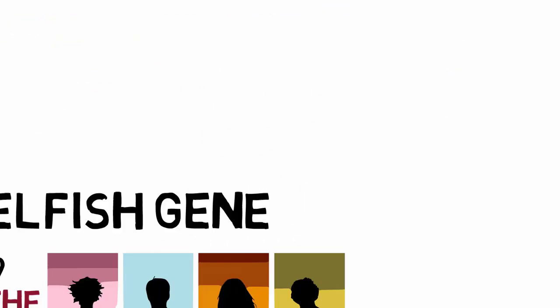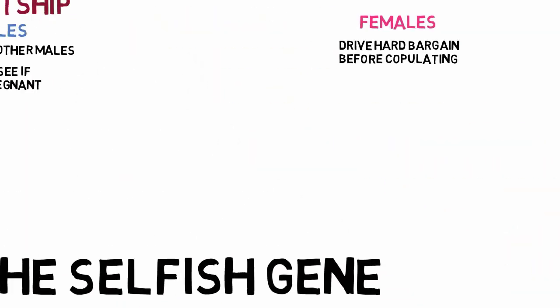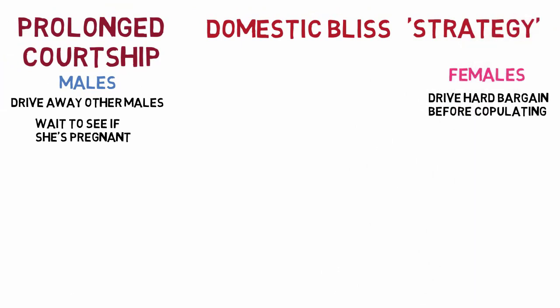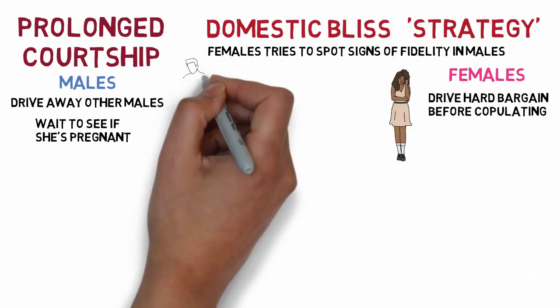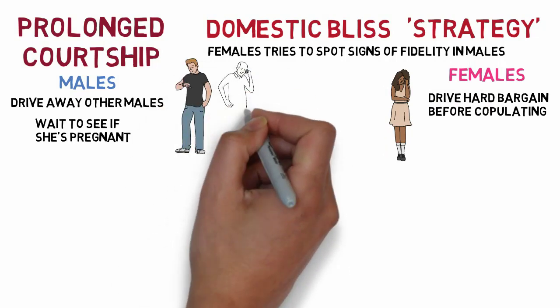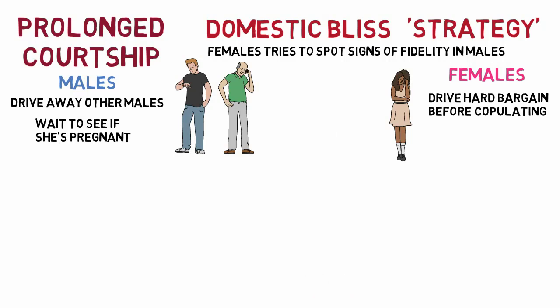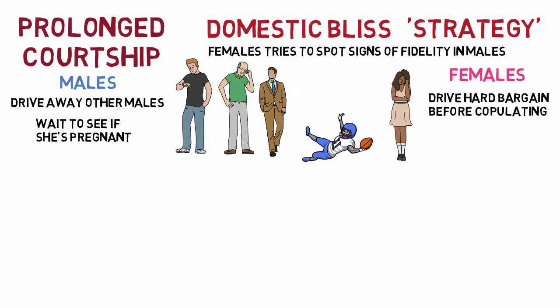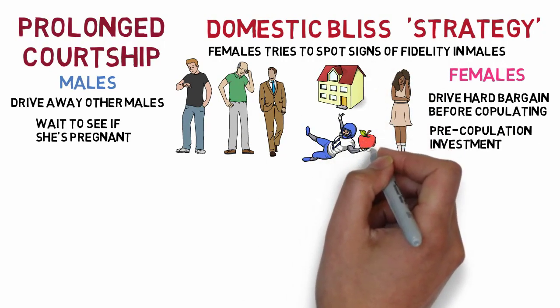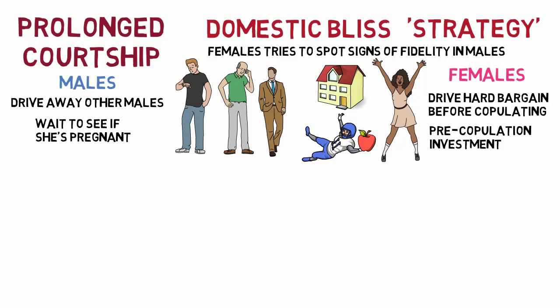Dawkins explains two strategies: domestic bliss and the He-Man strategy. Strategy here refers to a blind, unconscious behavioral program. Under the domestic bliss strategy, the female tries to spot signs of fidelity and domesticity in the male. She can play hard to get for a long time, and any male not patient enough to wait until she consents to copulate is not likely to be a good bet as a faithful husband. The female weeds out casual suitors and finally copulates with a male who has proven his qualities of fidelity and perseverance — for example, through pre-copulation investment like building a nest or feeding her substantial food. Feminine coyness and prolonged courtship are very common among animals. Dawkins disputes the reasoning that heavy investment by the male will deter him from deserting, unless we assume females will welcome males who have deserted their previous mates.